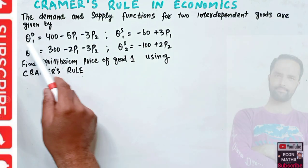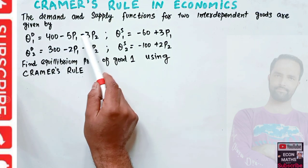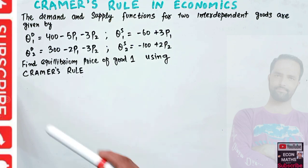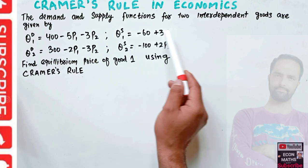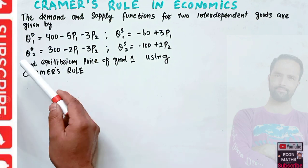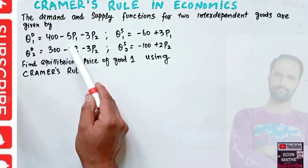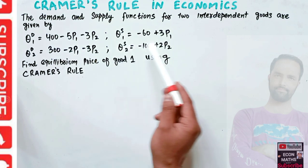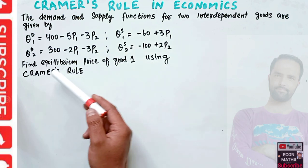The demand function of Good 1 is Q1d = 400 − 5P1 + 3P2, where P1 and P2 are the prices of Good 1 and Good 2. The quantity supplied of Good 1 is a function of only P1. The demand function for Good 2 is Q2d = 300 − 2P1 − 3P2, and the supply function is Q2s = −100 + 2P2.